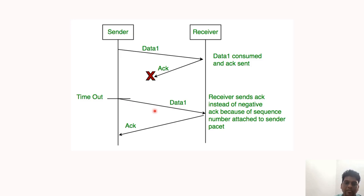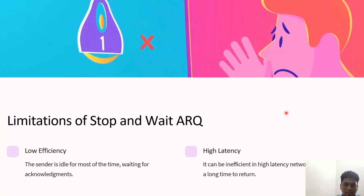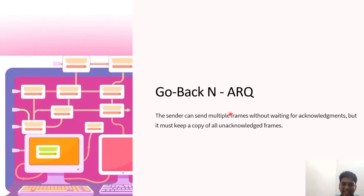Instead of a negative acknowledgement, a sequence number is attached to each frame in every sequence. There are some limitations of the Stop-and-Wait protocol: it has very low efficiency, as the sender is idle most of the time waiting for an acknowledgement. It consumes a lot of time and has high latency, causing inefficiency in the network.